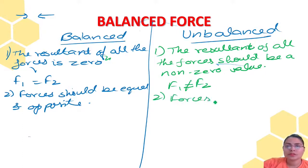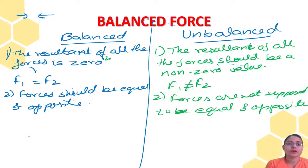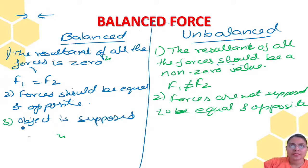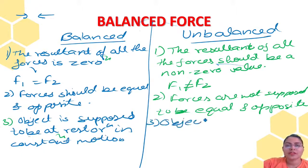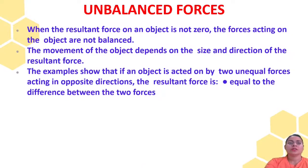For unbalanced force, the resultant of all forces has a non-zero value, and F1 should not be equal to F2 — the forces are not equal and opposite. When the resultant is zero (balanced force), the object stays at rest or in constant motion. When the force is unbalanced, the object changes its state — if it was in motion it can stop, and whatever state it was in will change.